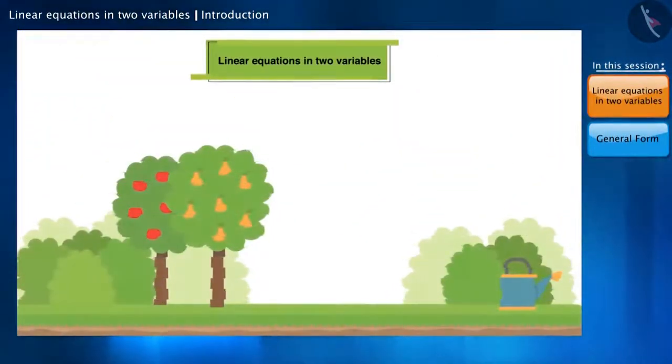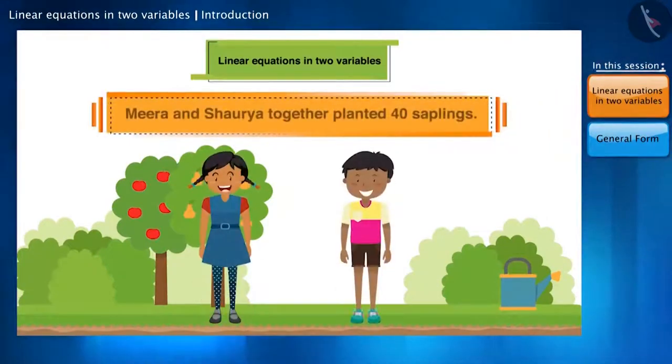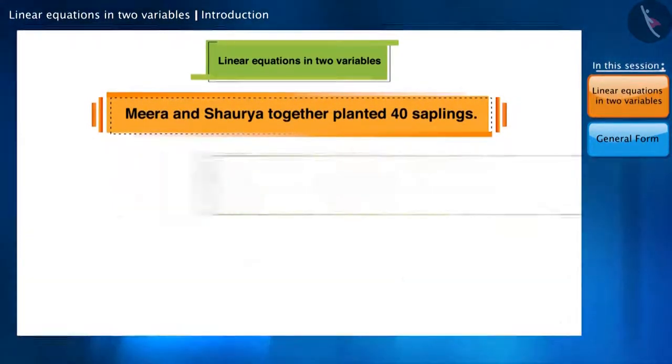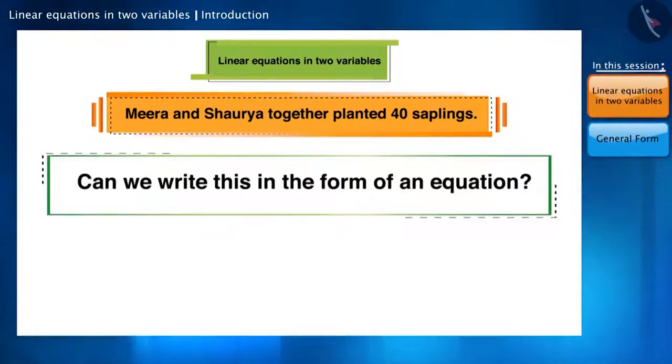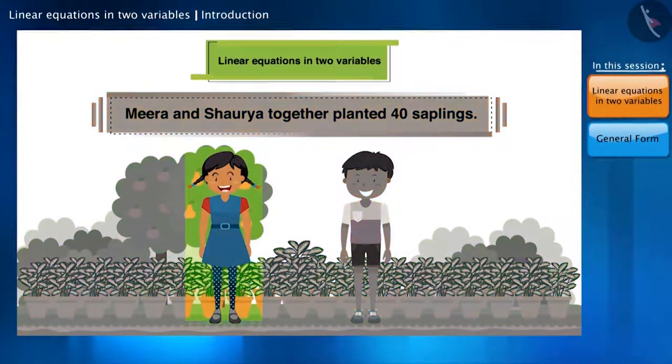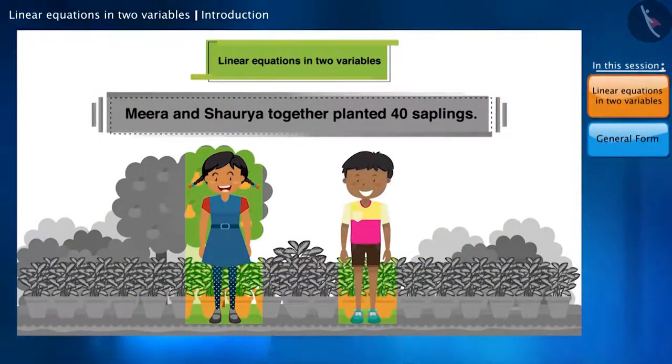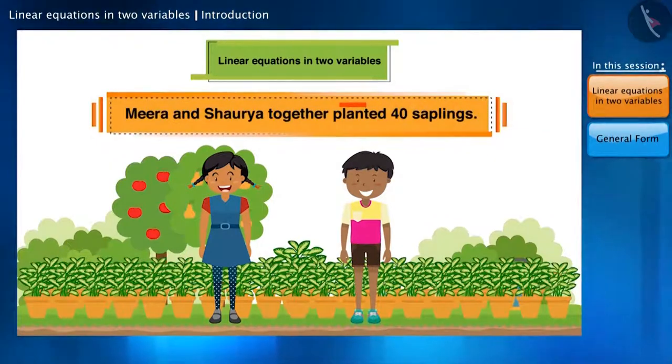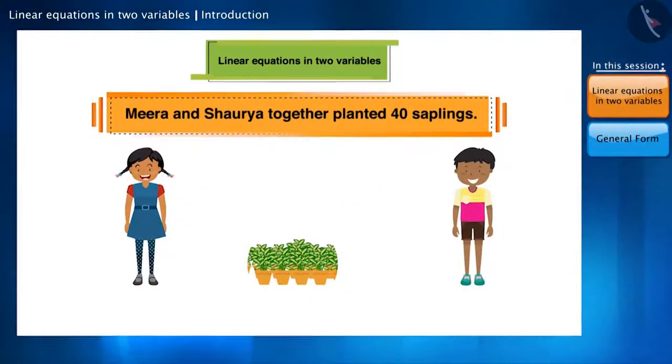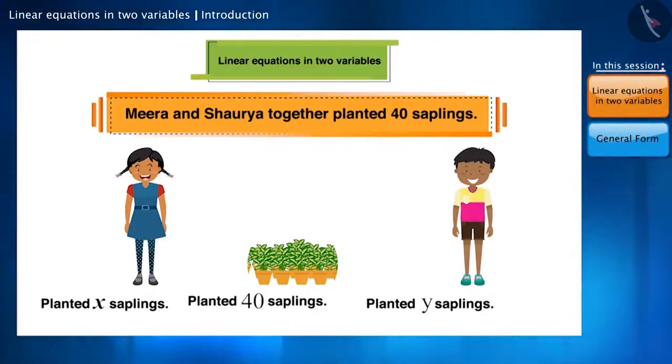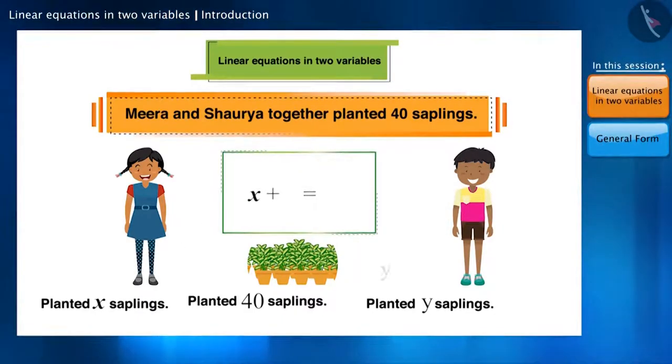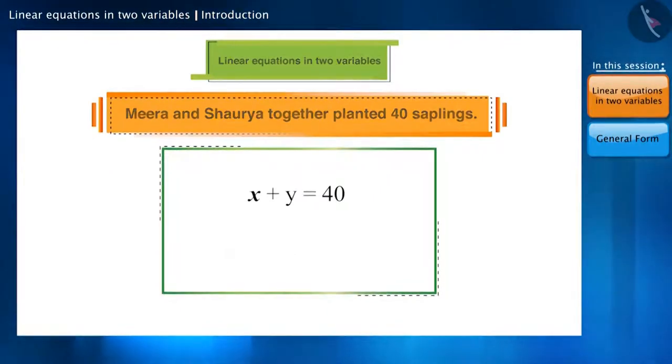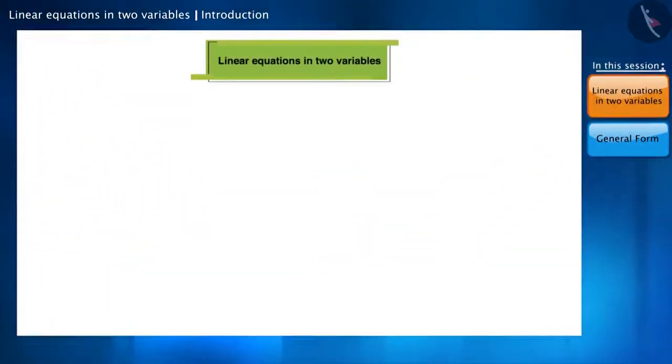Let's try to understand this with an example. Meera and Shaurya together planted 40 saplings. Can they write this in the form of an equation? Yes, let's see how. We don't know how many plants Meera and Shaurya planted individually, but together they planted 40 saplings. Suppose Meera planted X saplings and Shaurya planted Y saplings. Together they planted 40 saplings, so we get X plus Y is equal to 40. This becomes an equation.